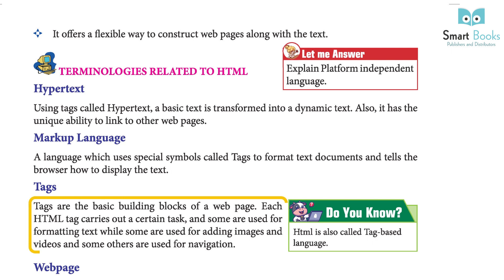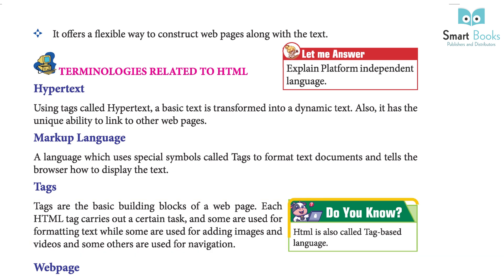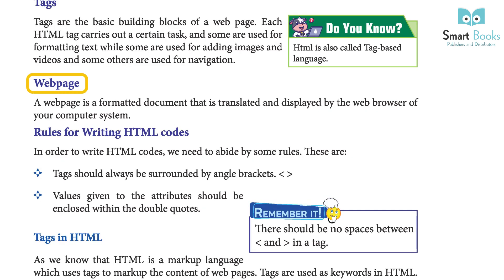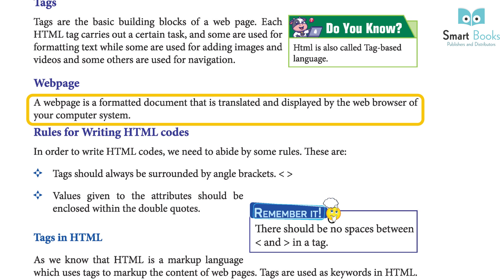Tags are the basic building blocks of a web page. Each HTML tag carries out a certain task. Some are used for formatting text, some for adding images and videos, and some for navigation. HTML is also called a tag-based language.